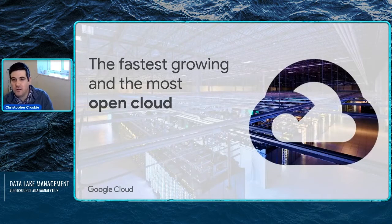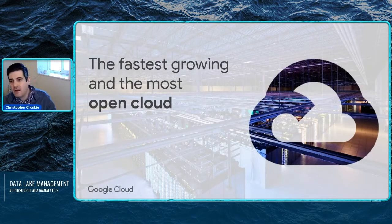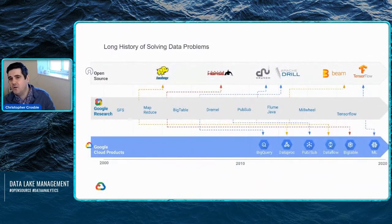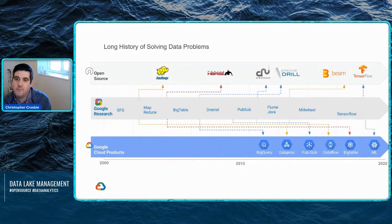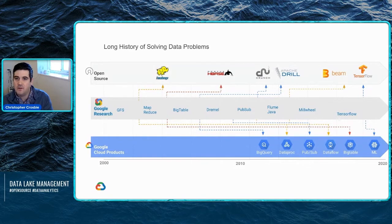We do think that Google Cloud is the fastest and most open cloud. We really strive to be as interoperable and as open as possible. We have this long history of solving big data problems and providing back to open source. This goes all the way back to the original Hadoop paper that was written by a Google employee, and then spun out and became Apache Hadoop from some Googlers that ended up going to Cloudera.